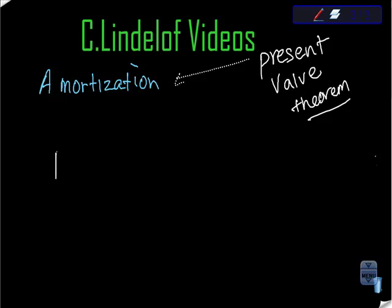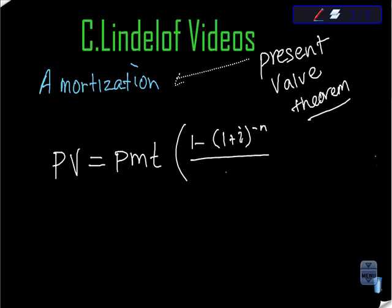So first I'm going to start with present value theorem, which says present value is equal to the payment, and you should have this memorized, this is really important. It's equal to 1 minus quantity 1 plus periodic interest to the negative number of compounding periods, back over I. So this is something we have memorized.